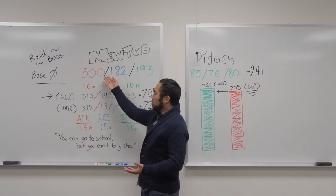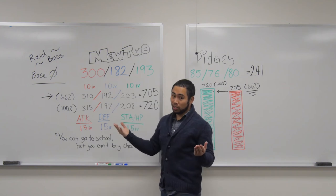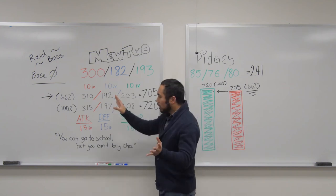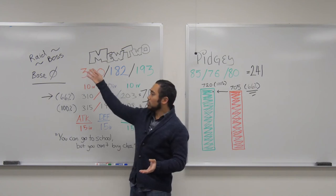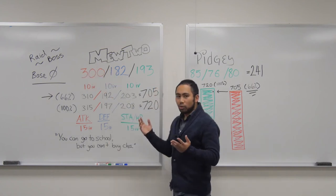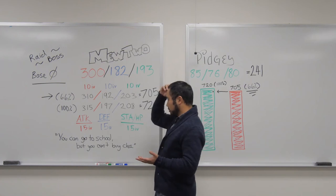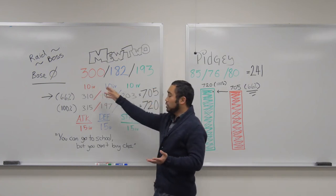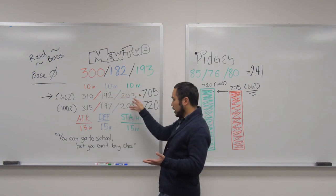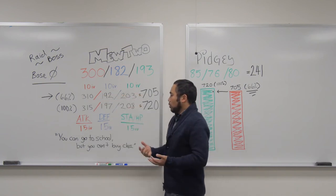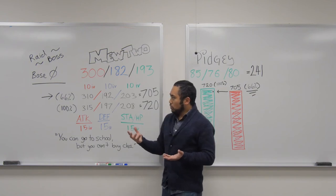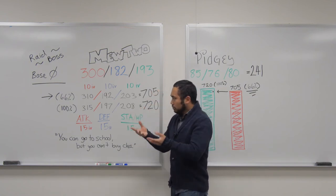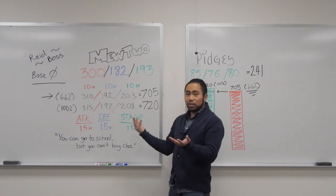But this would be a base 0 Mewtwo, which in theory would not exist. Well, in theory it would exist, but in reality it's a raid boss. So raid bosses come in the flavors of, basically, the minimum IV for each stat would be 10, 10, 10 for each relevant stat. And since there's 45 stat points that pop around, that's 30 points already. So it's pretty good.